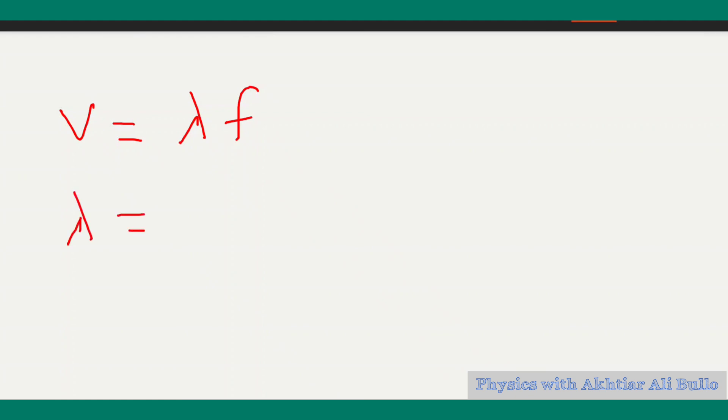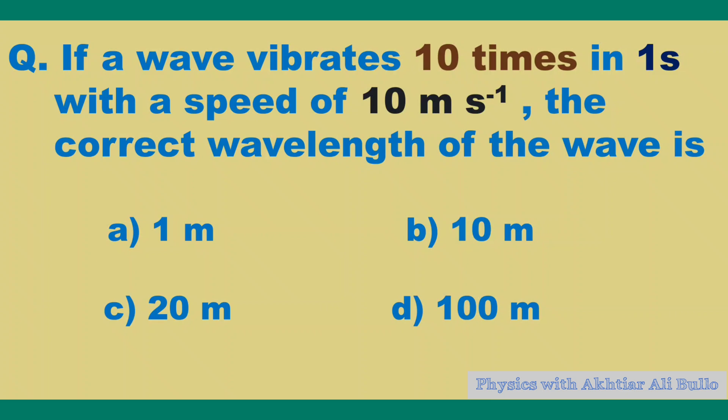We have v as 10 meters per second, but frequency is not given. We will calculate frequency from the given information: the number of vibrations is 10 and the time is 1 second.